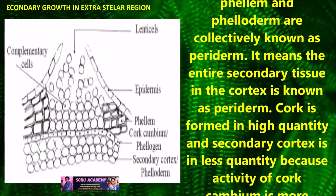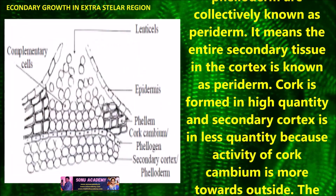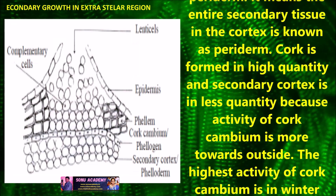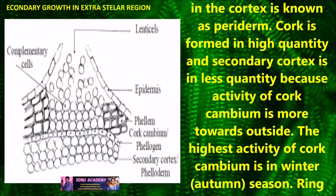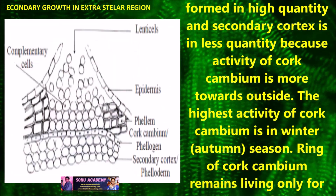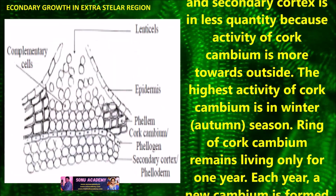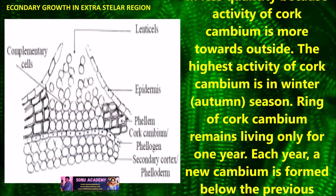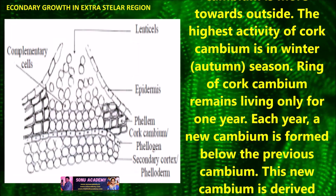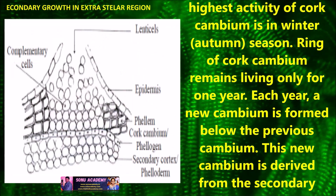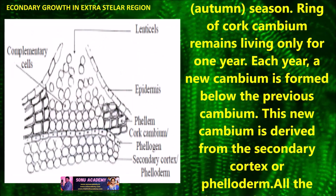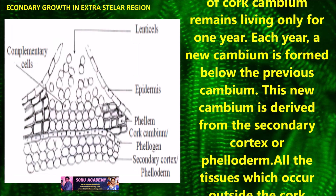Cork is formed in high quantity and secondary cortex is in less quantity, because the activity of cork cambium is more towards the outside. The highest activity of cork cambium is in winter, or the autumn season. The ring of cork cambium remains living only for one year. Each year a new cambium is formed below the previous cambium.